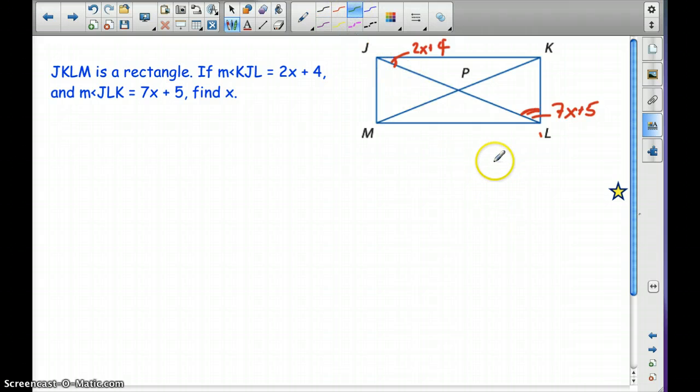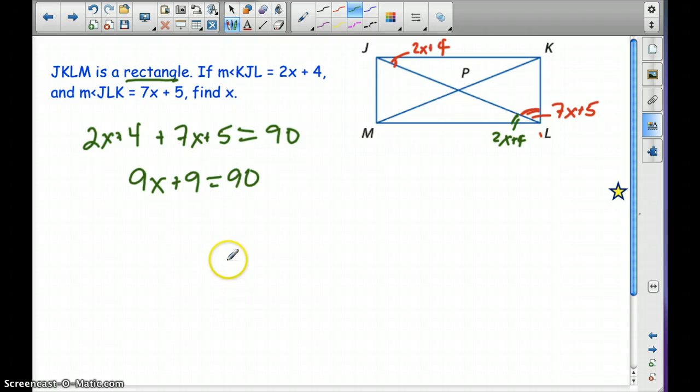Well, we know we're going to have alternate interior angles. So if this angle right here is 2X plus 4, then this angle right here has to be 2X plus 4. And because it is a rectangle, they have to equal 90. So let's take 2X plus 4 plus 7X plus 5 equals 90. So we have 9X plus 9 equals 90. Subtract 9 from both sides, and we get 9X equals 81. Therefore, X equals 9.